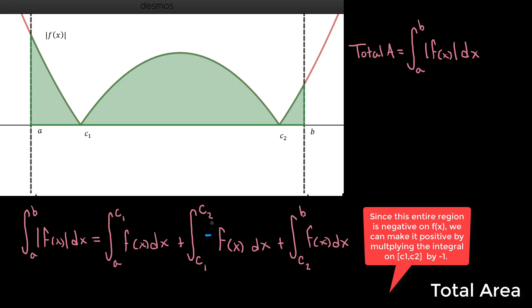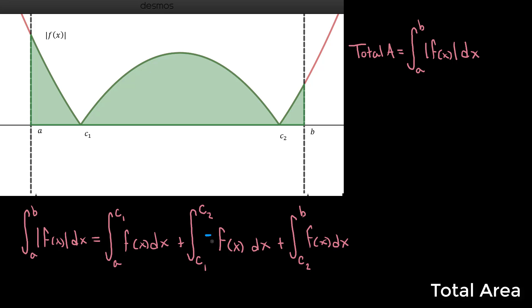And again, I'm noting that we just made the negative area between c1 and c2 positive by tacking on a negative symbol for that region's area, making our area now the definite integral from a to b of the absolute value of f(x) is equal to the definite integral from a to c1 of f(x), which is that positive region which we didn't have to modify, plus the definite integral from c1 to c2 of negative f(x).